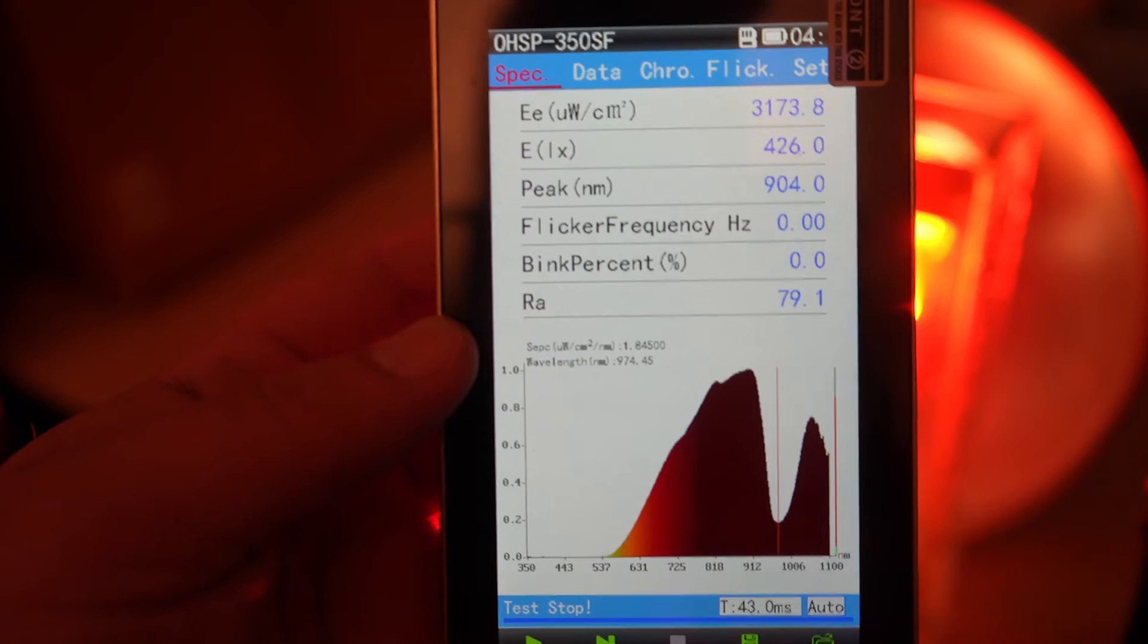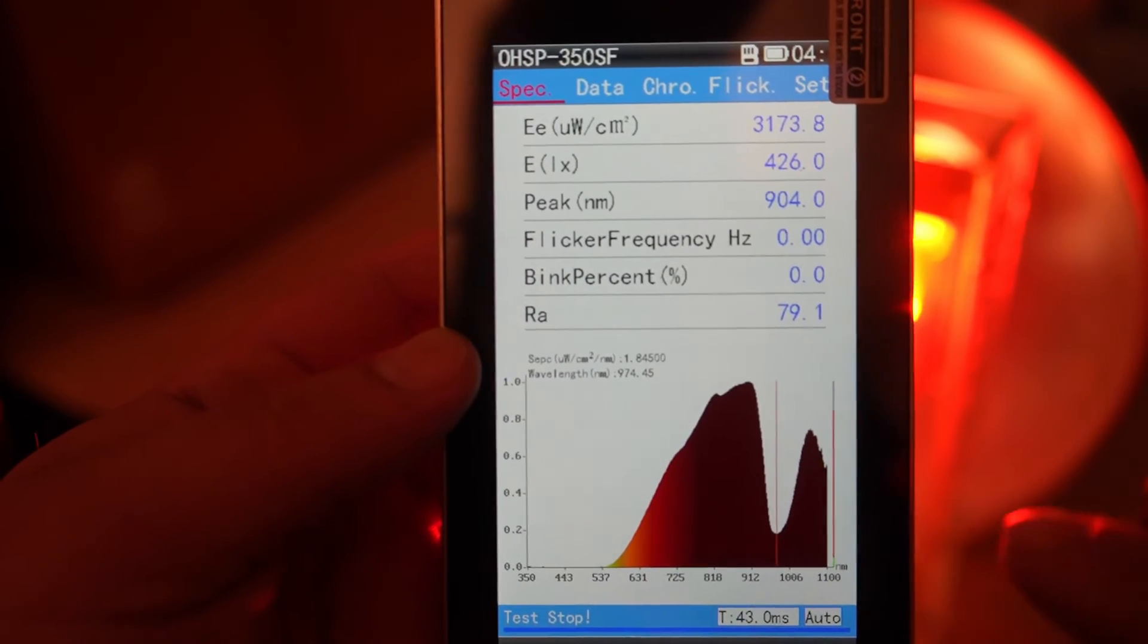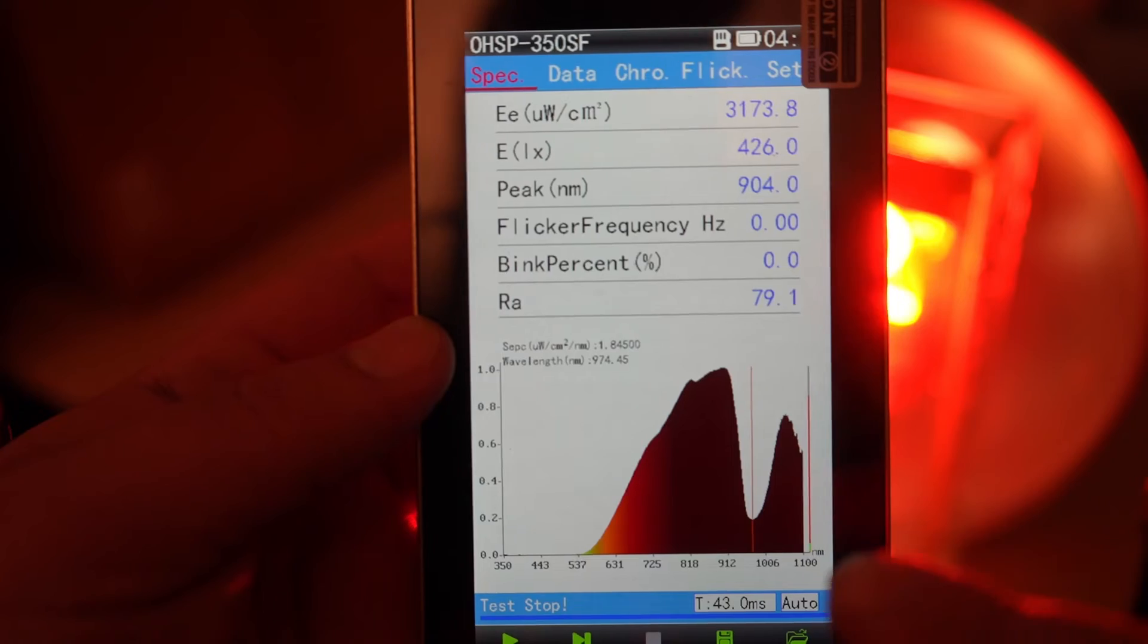So now when we remeasure at the same distance, we only get 3 milliwatts per centimeter squared, and we see we've changed the spectrum.